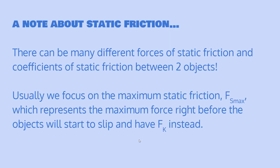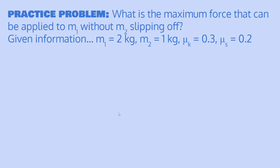A small note about static friction: there can actually be many different values of static friction, because you can apply different amounts of force to an object before it starts moving. For example, a book on a desk might not move whether you barely touch it or push it harder. What we focus on is the maximum force of static friction, written as Fs max — that's the maximum force right before the objects start to slip. Once they start moving against each other, we call it kinetic friction instead.